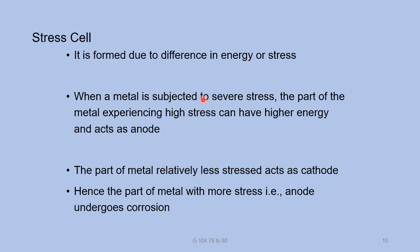When a metal is subjected to severe stress, the part experiencing high stress has higher energy and acts as anode — it undergoes corrosion easily. The part with low stress has less energy and acts as cathode — that undergoes corrosion not easily.